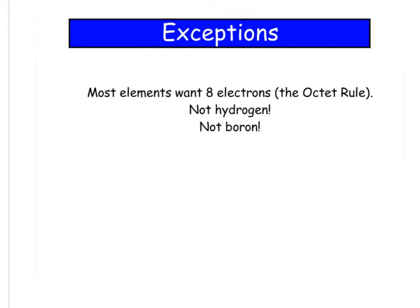So there are some exceptions to the octet rule. Most everybody wants eight electrons, but not hydrogen. He only wants two, that's all he can hold. And not boron. He's happy with six.